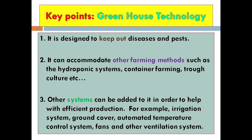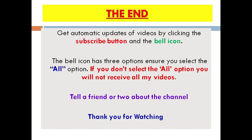Key points of the greenhouse: number one, it is designed to keep out diseases and pests, unlike the open farm; number two, it can accommodate other farming methods such as hydroponic systems, container farming, and trough culture; number three, other systems can be added to help with production, for example irrigation systems, ground cover, automated temperature control systems, fans, and other ventilation systems. All these non-conventional methods have many advantages and can be modified to suit their needs.